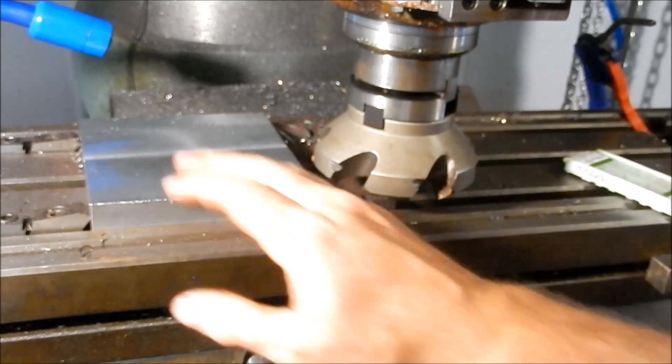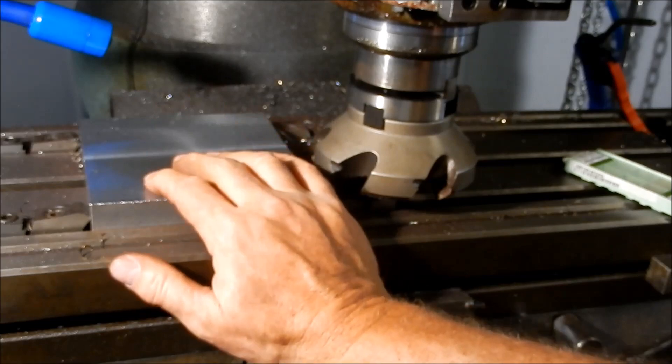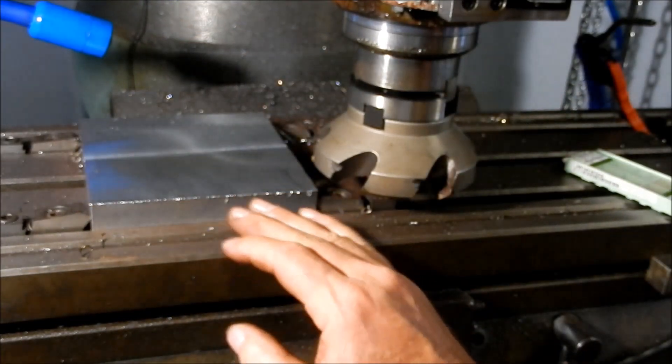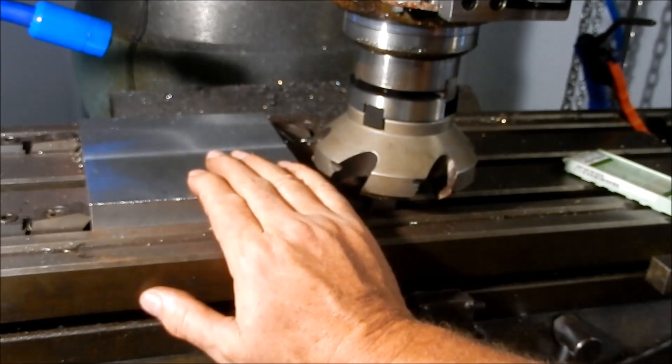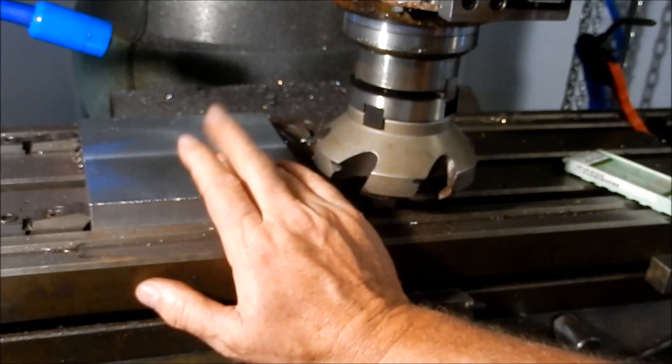So I'm really happy with that surface finish. That's come up an absolute treat. We'll flip this over, bring this down to size, and then we're going to cut a little perimeter step down, where we're going to mill our dovetails into. Right, so I'll break this set up, clean the table down, we'll flip it over and clamp it up again.